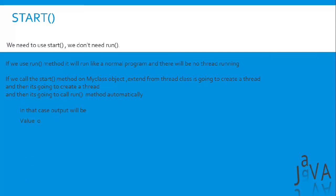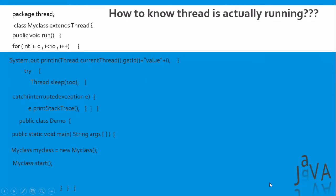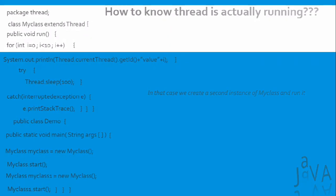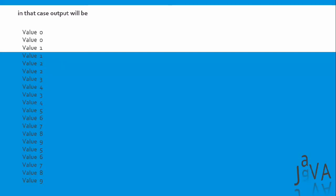In that case, our output will be values 0 through 9. Our next question is: how do we know the thread is actually running? In the same code, we add a second instance of MyClass and run it — MyClass myClass1 = new MyClass(); myClass1.start(). The output shows that they are running concurrently, printing numbers interleaved.